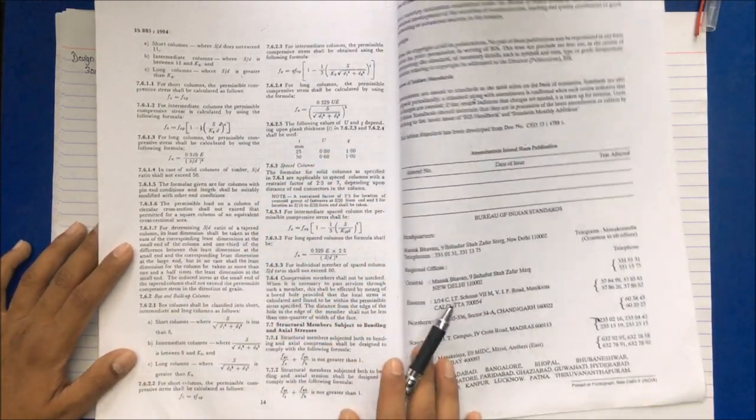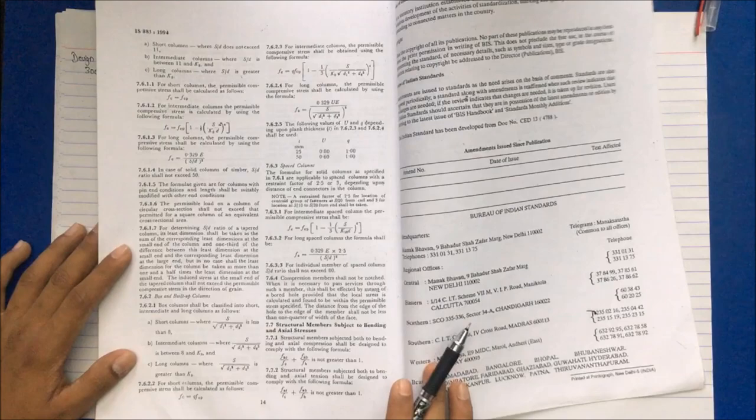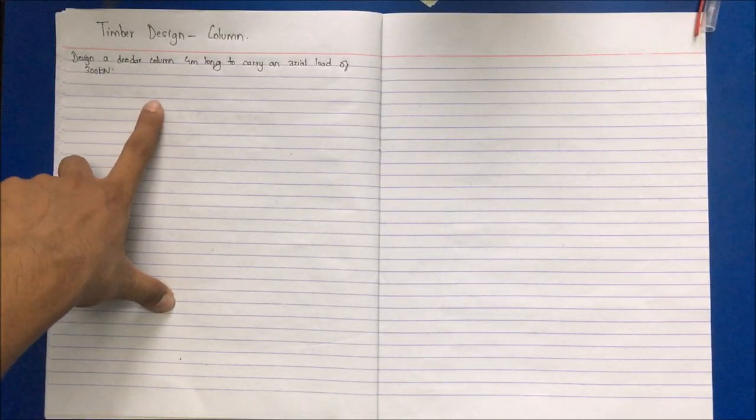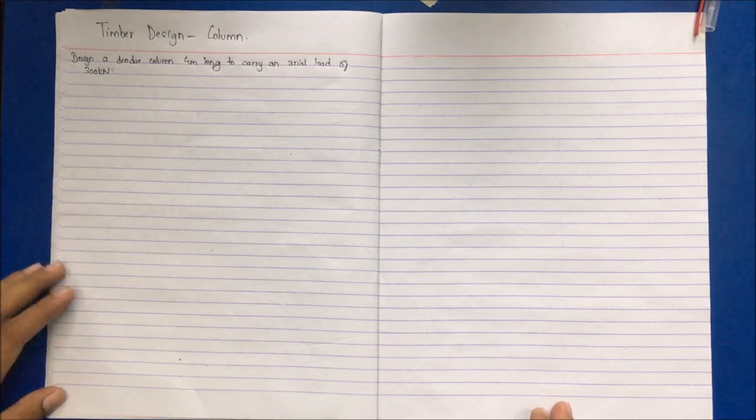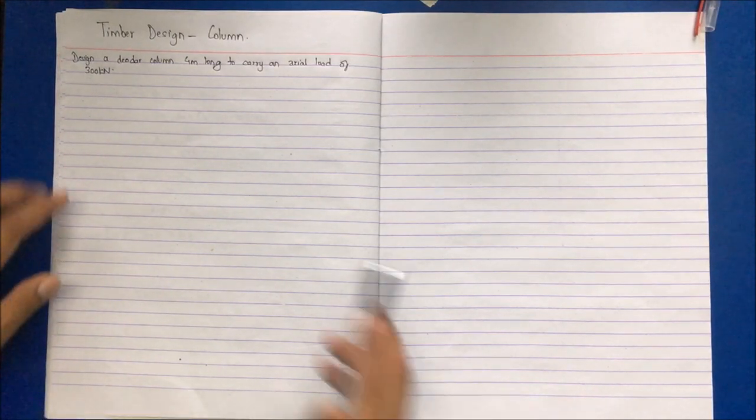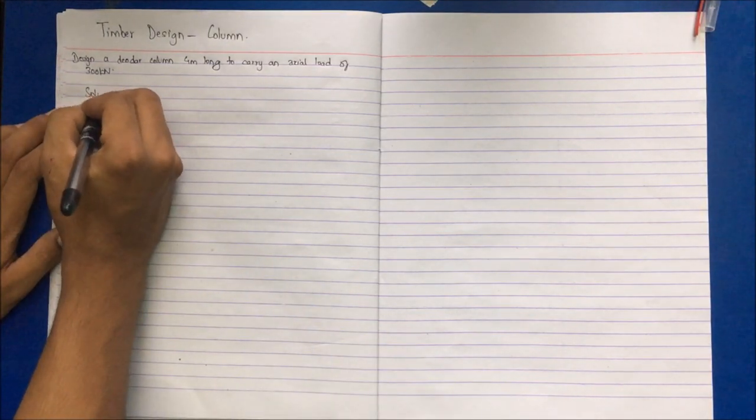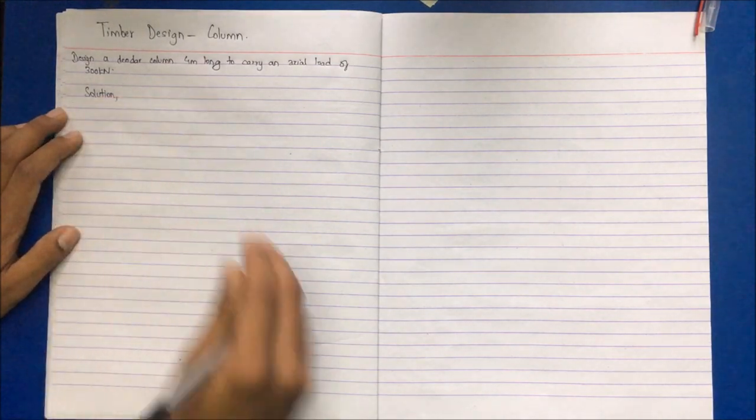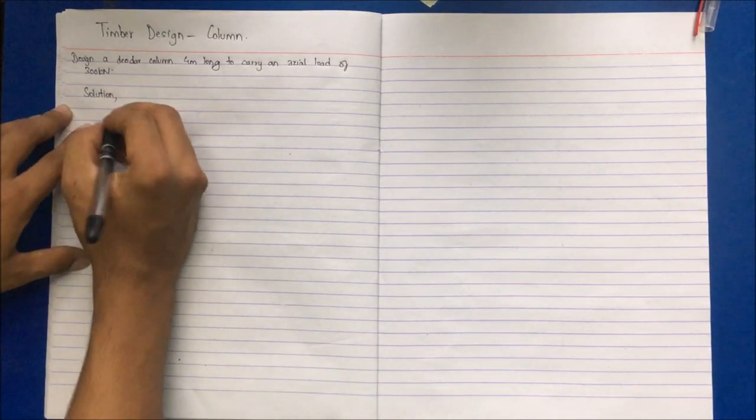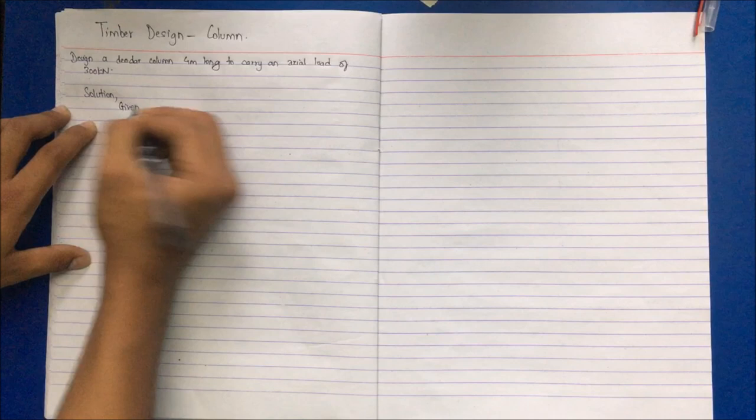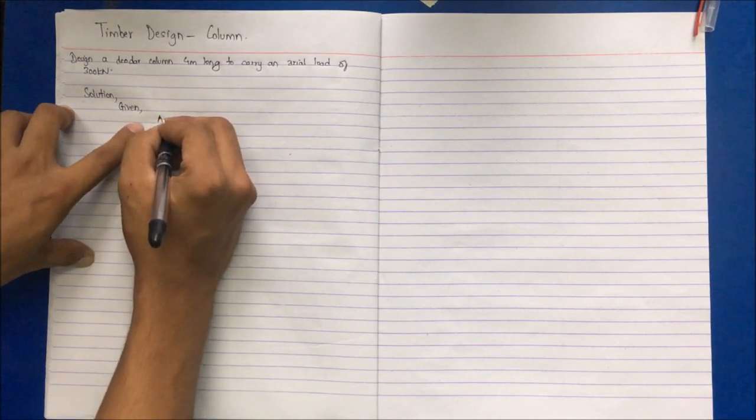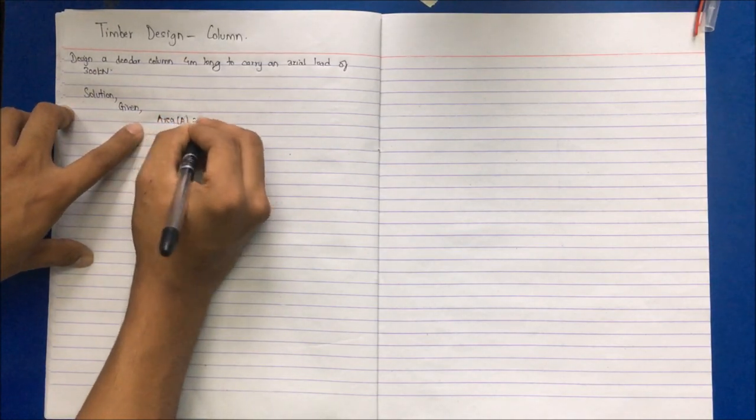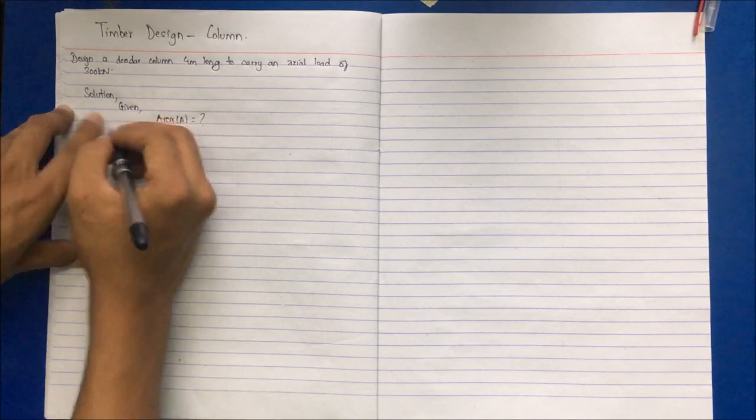Now I have a question here: design a deodor column 4 meters long to carry an axial load of 300 kilonewton. The design procedure will be same for various types of questions. First, area has to be calculated for this load of 300 kilonewton for deodor column.